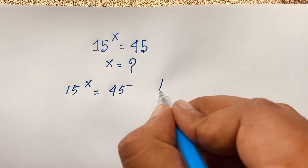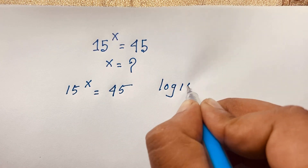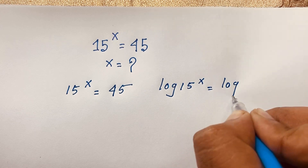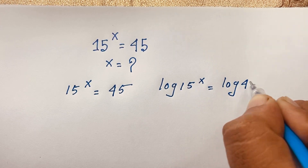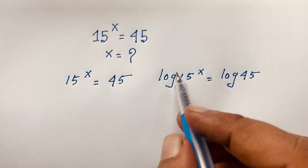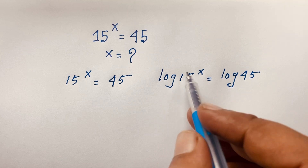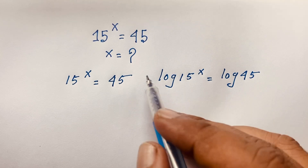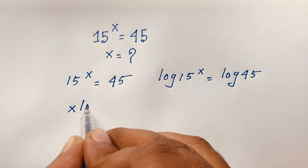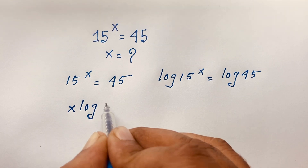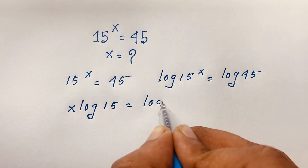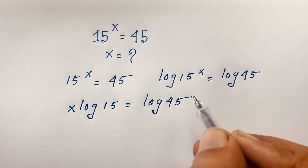Now I apply log to both sides, so log of 15 power x is equal to log 45. According to logarithm rules, I bring the exponent x in front, so it becomes x times log 15 is equal to log 45.